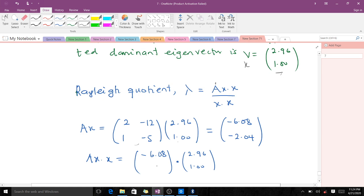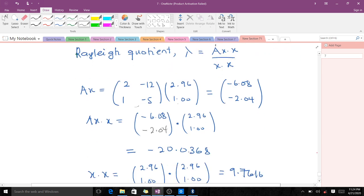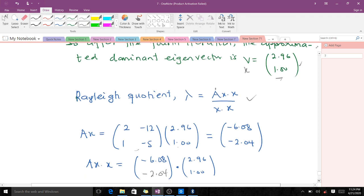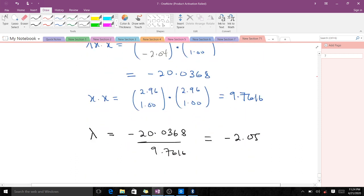The dot product gives us -20.036 for the numerator. The dot product of x and x gives us 9.7616 for the denominator. The Rayleigh quotient gives us the ratio -20.036 / 9.7616 = -2.05. Approximately, the dominant eigenvalue is -2.